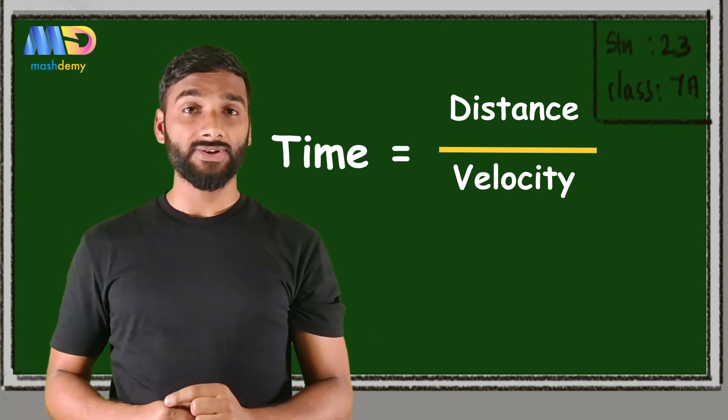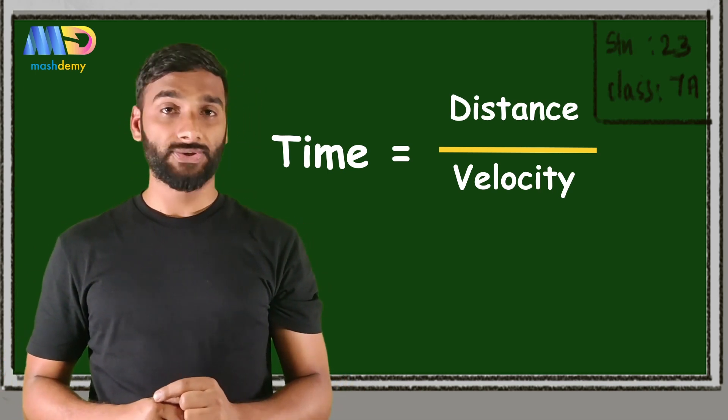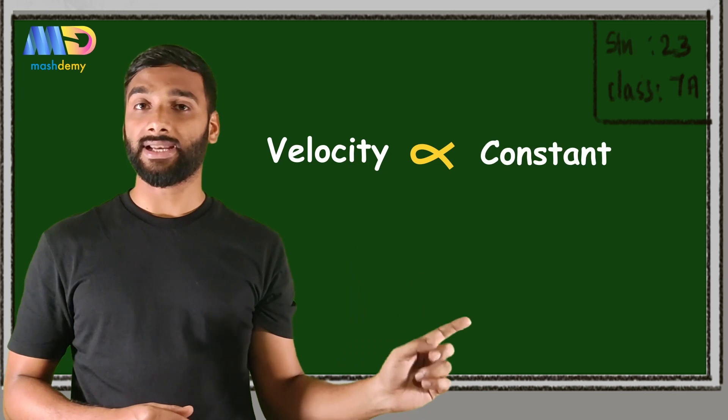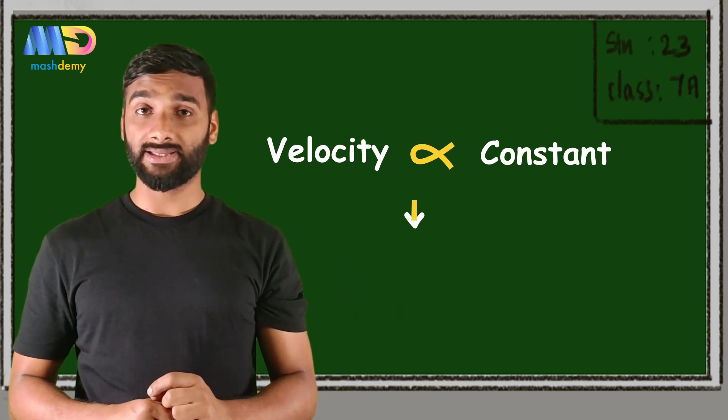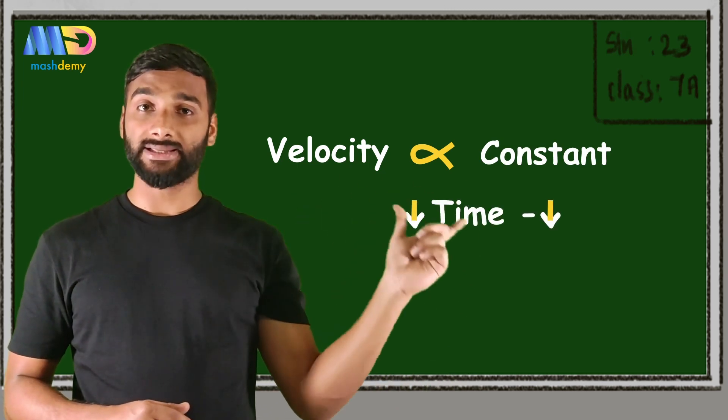In a single medium, the velocity of light never changes—the velocity is constant. And for minimizing the time, we have to minimize the distance.